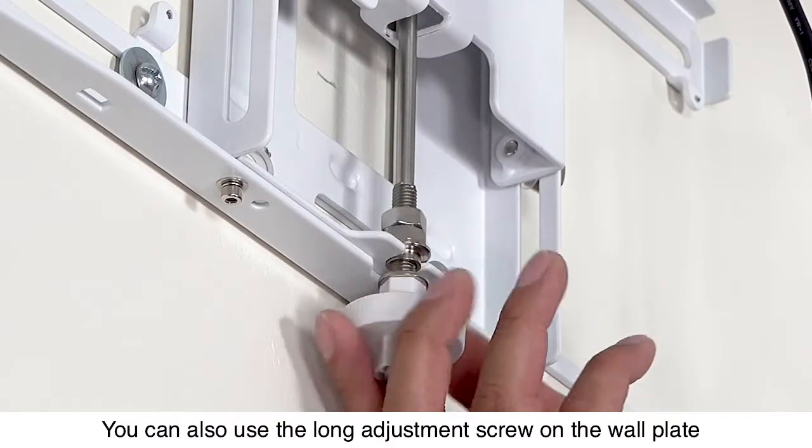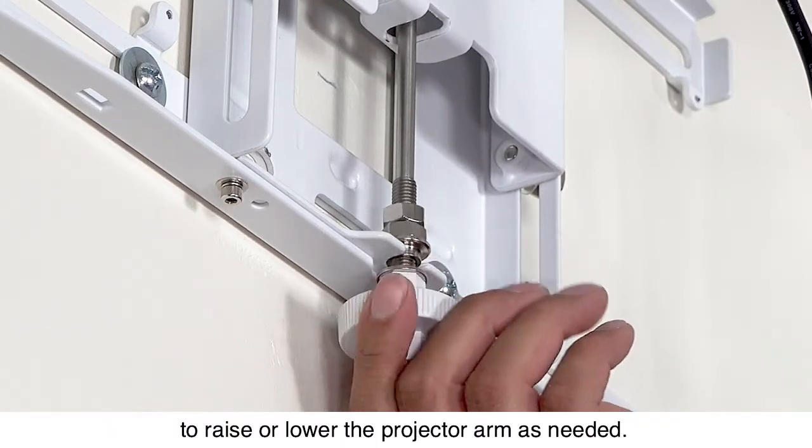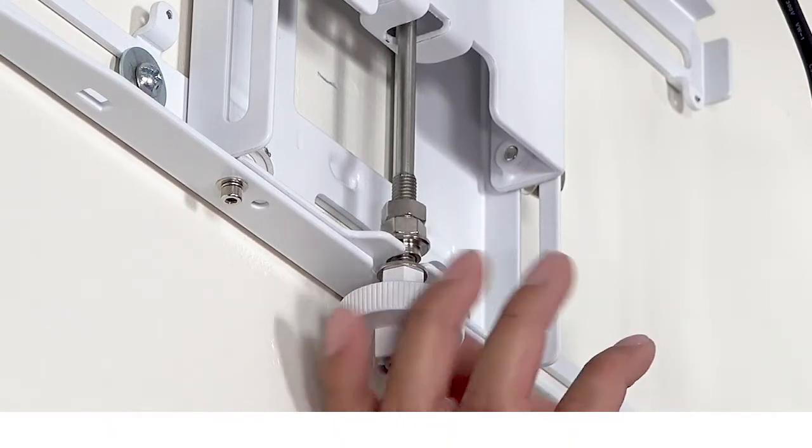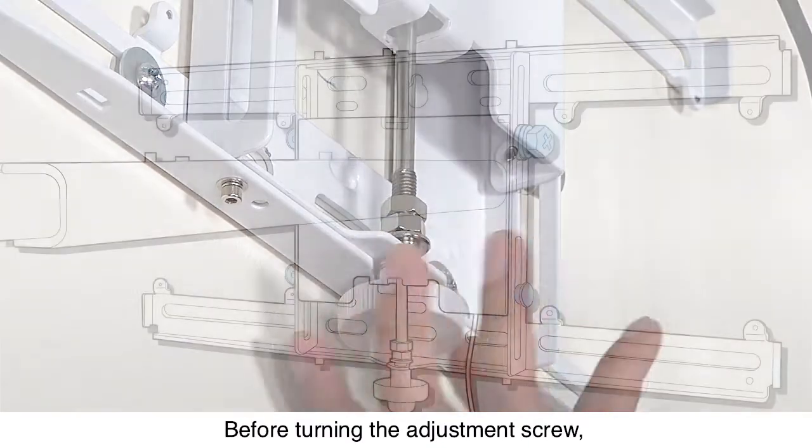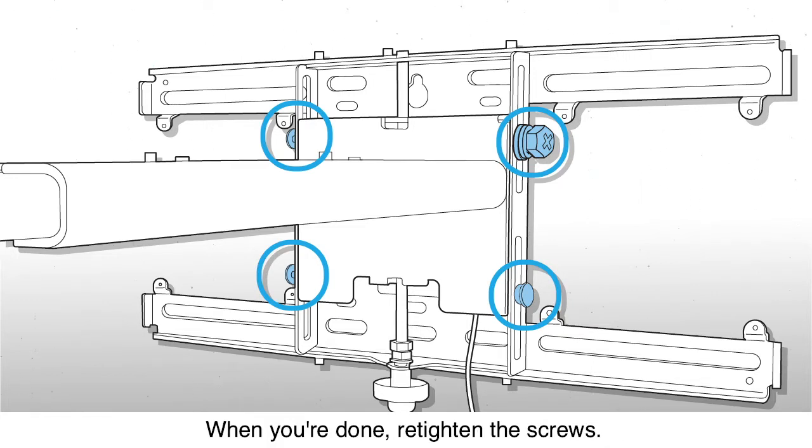You can also use the long adjustment screw on the wall plate to raise or lower the projector arm as needed. Before turning the adjustment screw, loosen the four screws along the side of the wall plate. When you're done, retighten the screws.